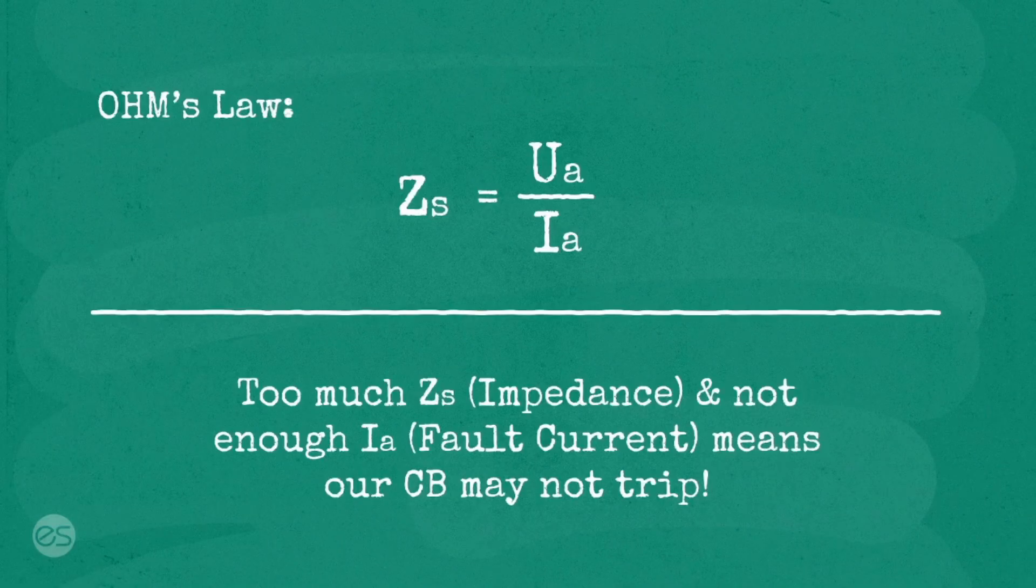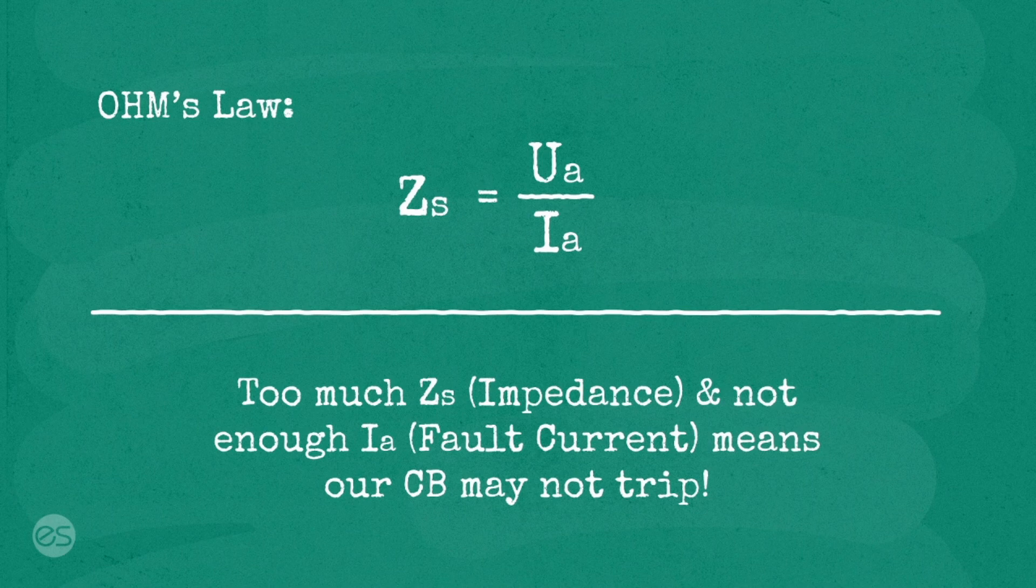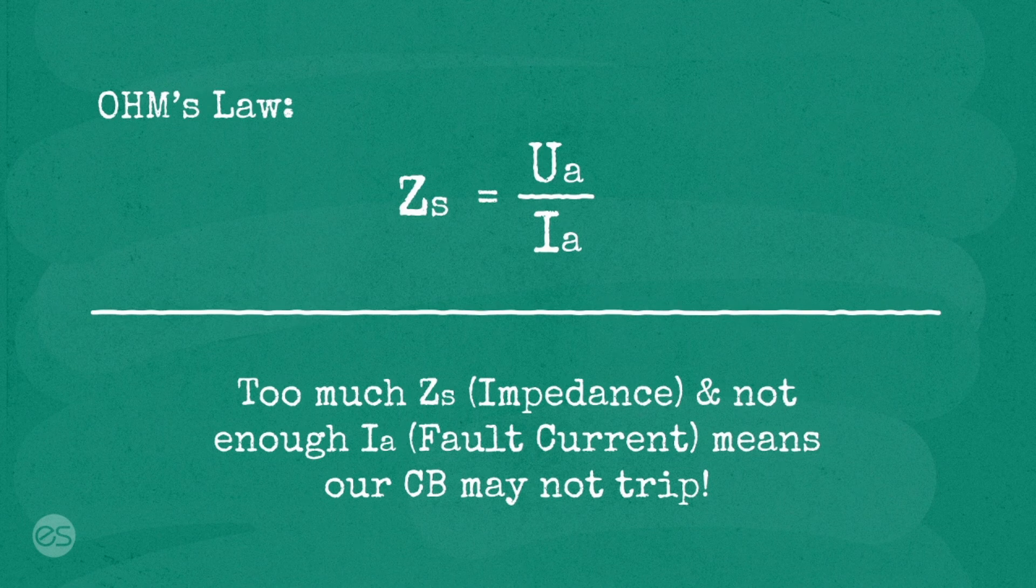Too much Zs, impedance, means not enough Ia, fault current, which means our circuit breaker can't trip or won't trip quick enough to save lives.